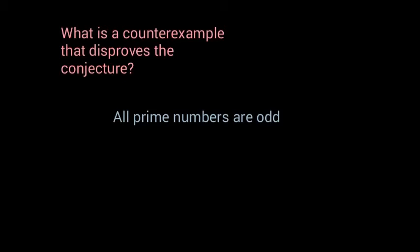So if we start thinking of prime numbers, we can just start listing some of these out. So we've got two, three, five, seven, eleven, thirteen, and you notice all these are odd, except for the very first one.